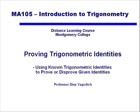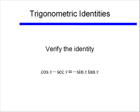In this video we're going to go over how to prove some trigonometric identities. We're going to use known trigonometric identities to prove or disprove a given identity. Let's look at a problem like this. Verify the identity: cosine x minus secant x equals negative sine x tangent x.